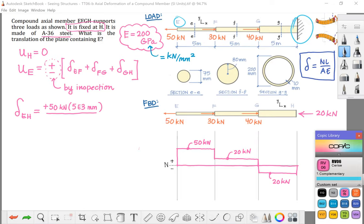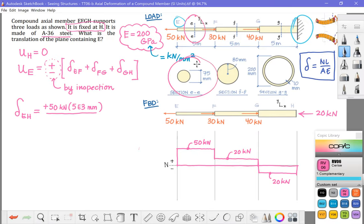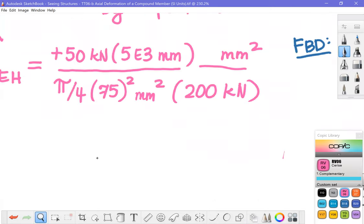In the denominator, I need the area, section A, section EE. There is the cross section right there. It's just a circle. So I'm going to use pi over 4 diameter, 75 squared, millimeter squared. And our modulus of elasticity, 200 kilonewtons per millimeter squared. See how I'm tossing that up into the numerator. Okay.